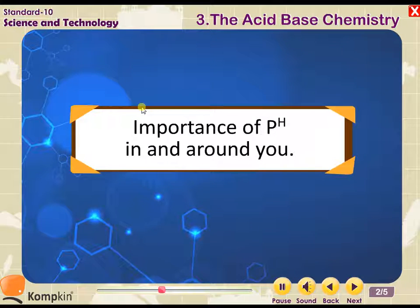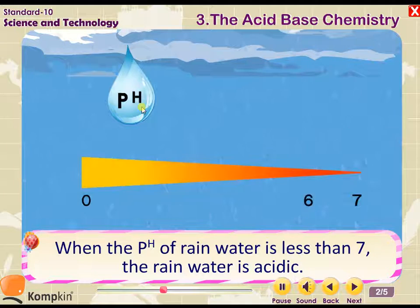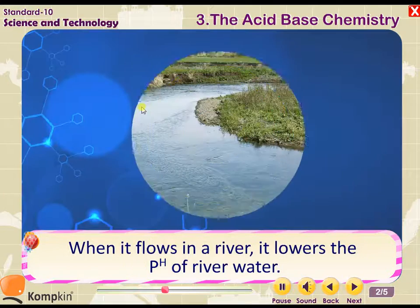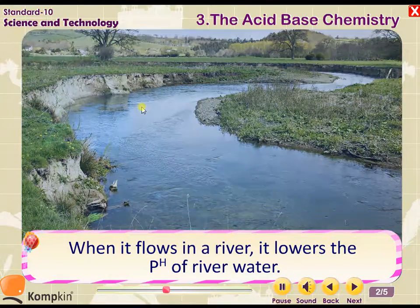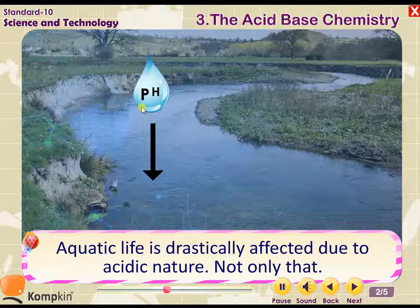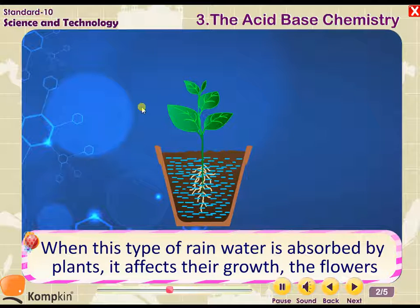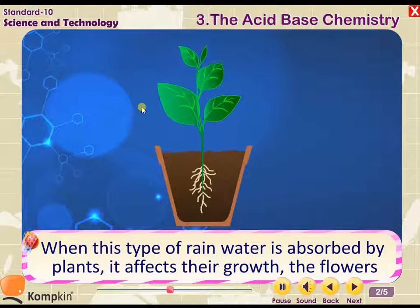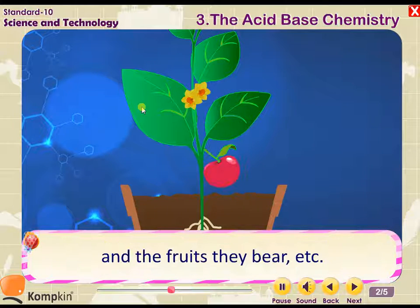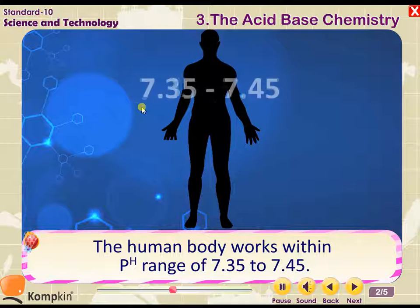When the pH of rainwater is less than 7, the rainwater is acidic. When it flows into a river, it lowers the pH of river water and aquatic life is drastically affected. When this acidic rainwater is absorbed by plants, it affects their growth, the flowers, and the fruits they bear.